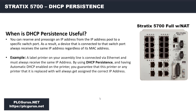By using DHCP persistence with automatic DHCP enabled on the printer, you guarantee that this printer — or any printer that replaces it — will always get assigned the same correct IP address. This makes it very easy from a maintenance perspective. You can have a spare printer in your general stores pre-configured for automatic DHCP, and if the printer on the production machine goes down, maintenance staff can simply grab a new printer, unplug the Ethernet connection, drop the new printer in, plug it back in, and away it goes — no additional configuration needed.